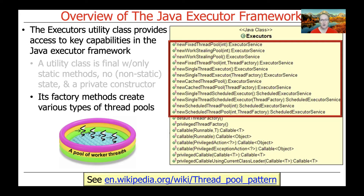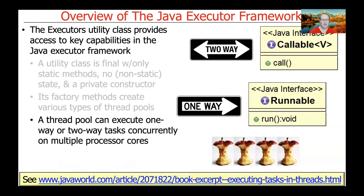We will cover a lot about thread pools in our upcoming discussions. The thread pools provided by the Executor framework can be used to execute one-way or two-way tasks concurrently on multiple processors or multiple processor cores.